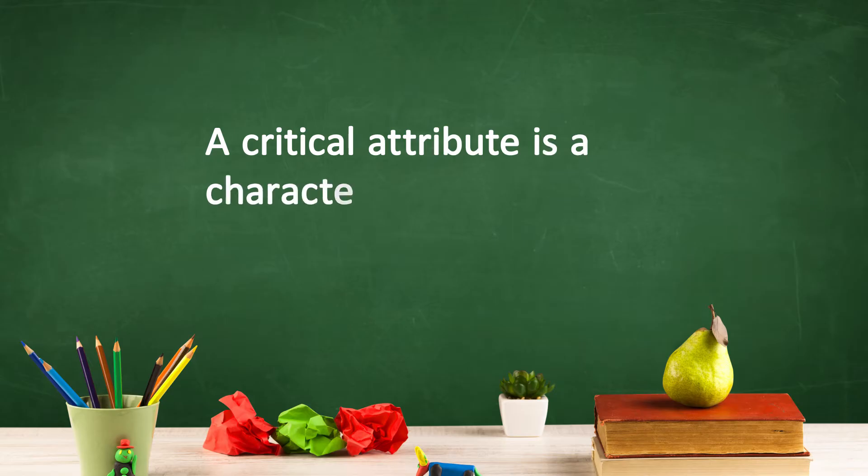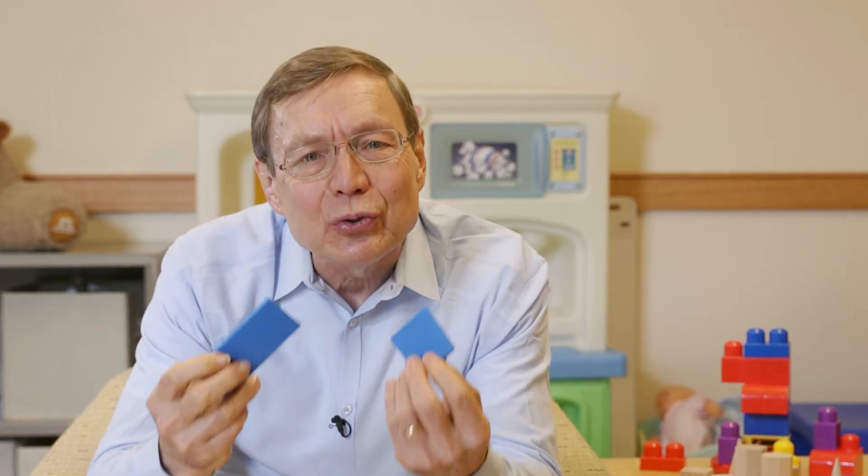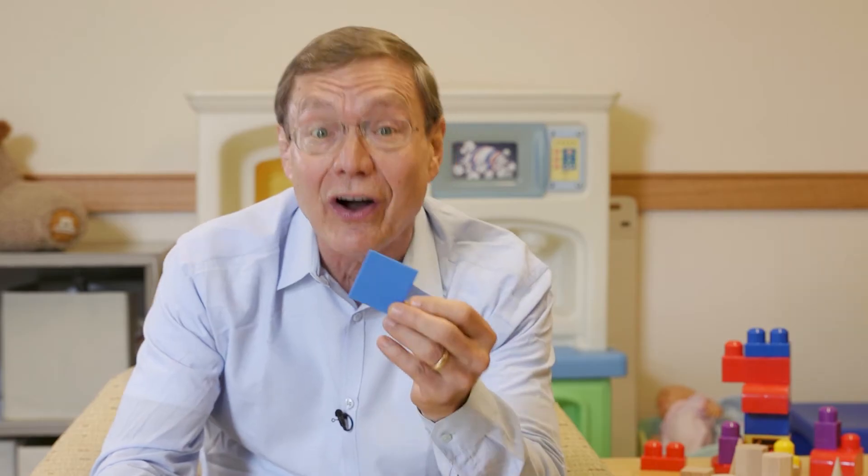As children more confidently recognize shapes, provide opportunities for them to name and describe the shapes using their critical attributes. A critical attribute is a characteristic shared by all examples of a shape. For instance, we would like children to eventually define rectangles as having four sides with the opposite sides equal and parallel. Although many rectangles have two long sides and two short sides, some do not. Therefore, having two long sides and two short sides is not a critical attribute of a rectangle. Additionally, squares share all the critical attributes of a rectangle, but have the additional critical attribute of four equal sides, so squares are actually a special type of rectangle.